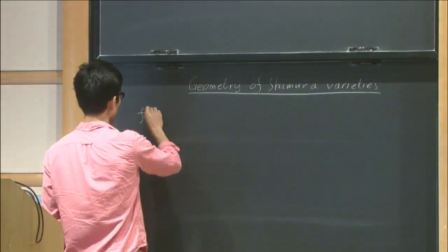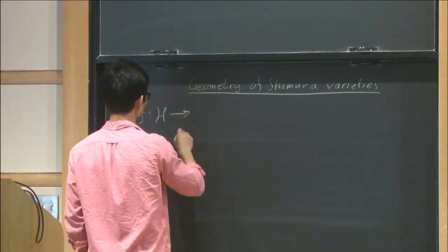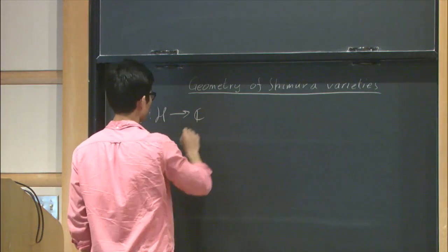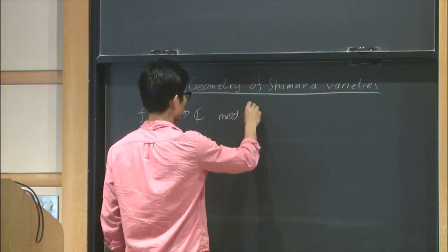The theory of Shimura Variety starts with the theory of modular forms. So modular forms are functions on the upper half plane - I won't bore you with the definitions.